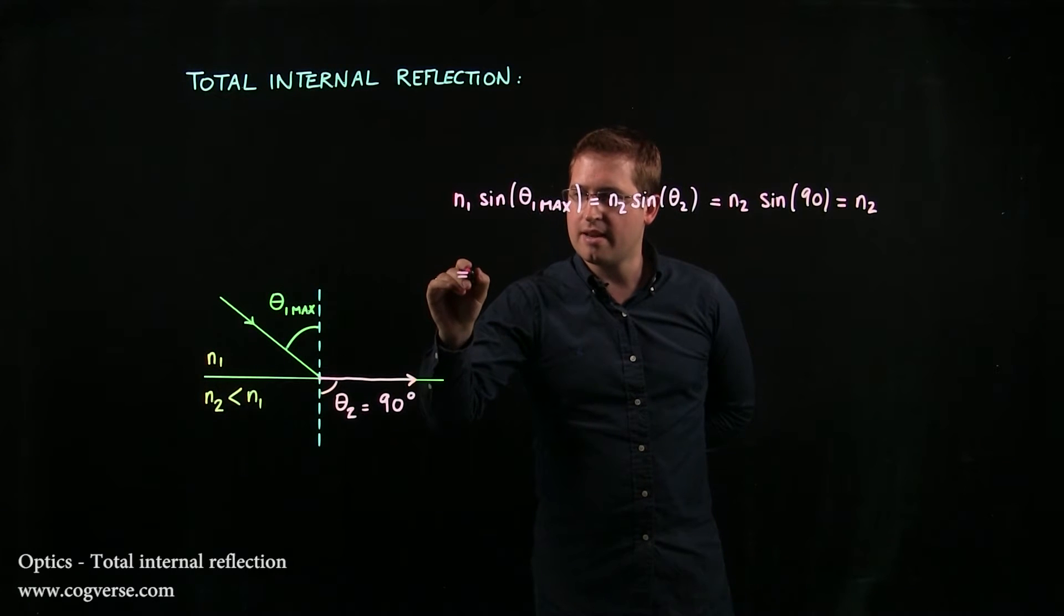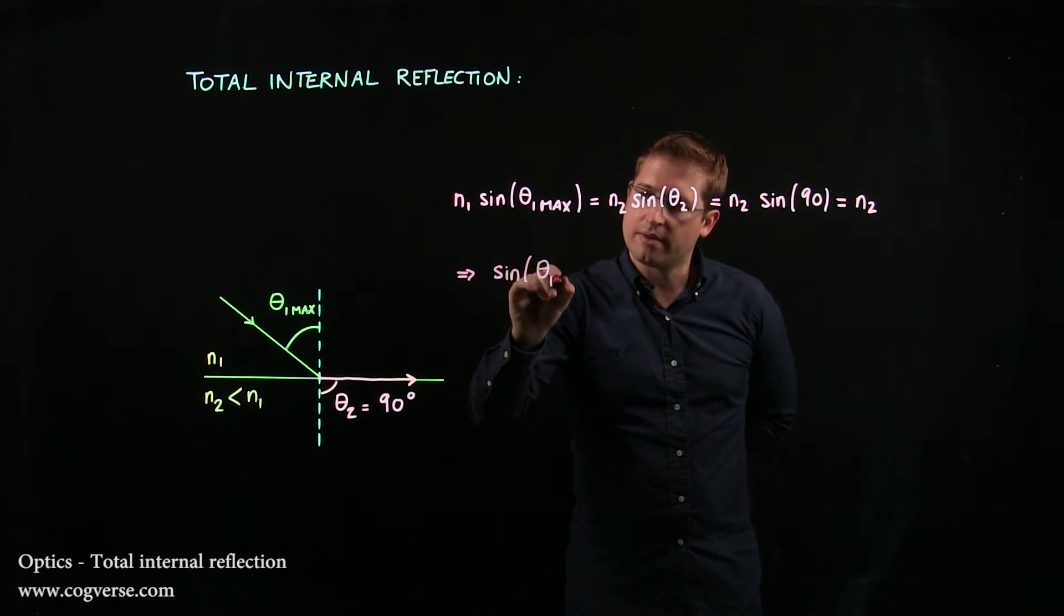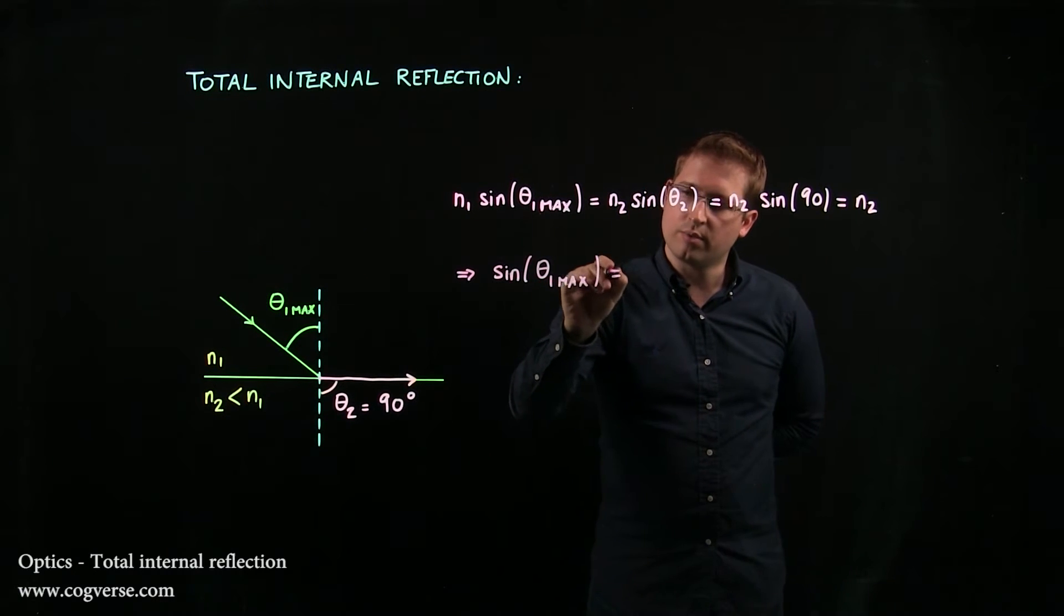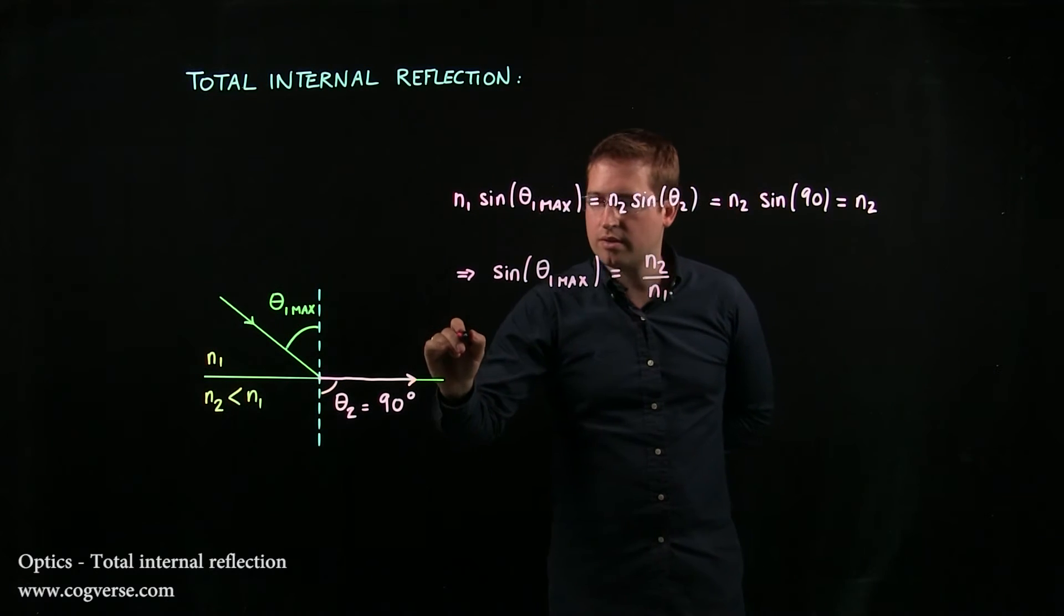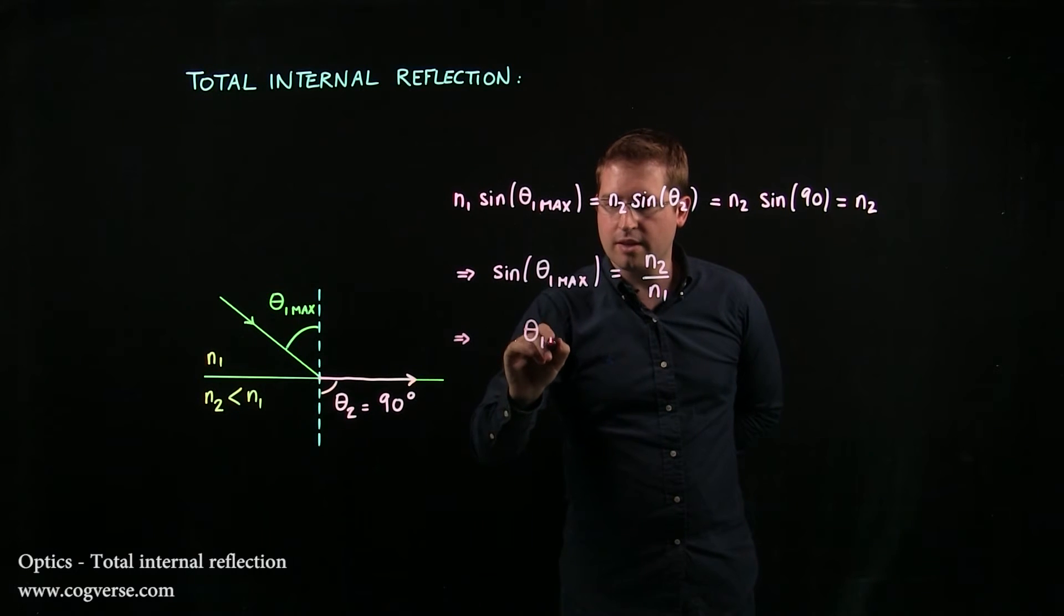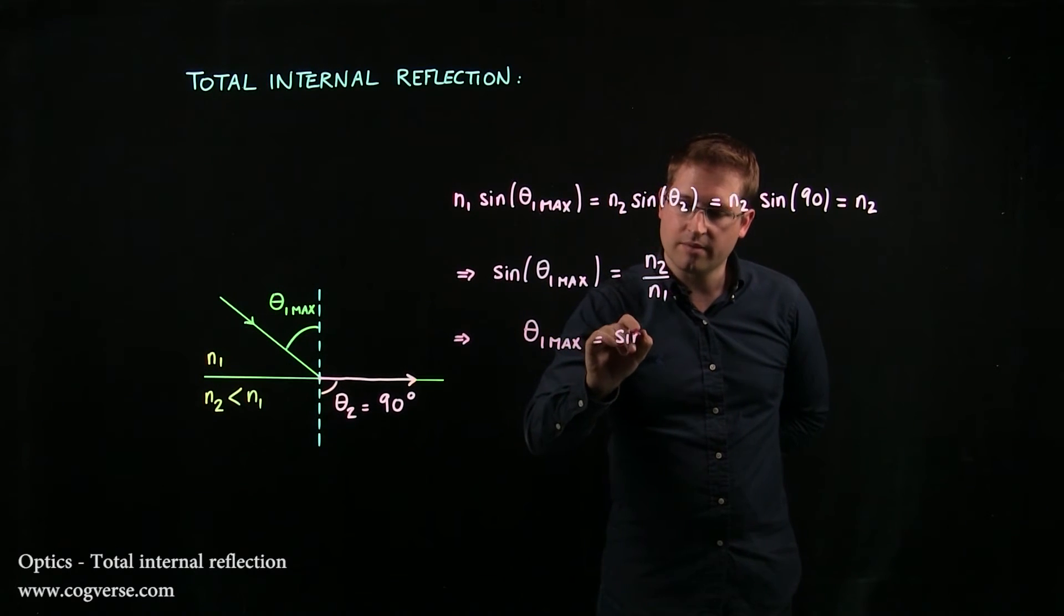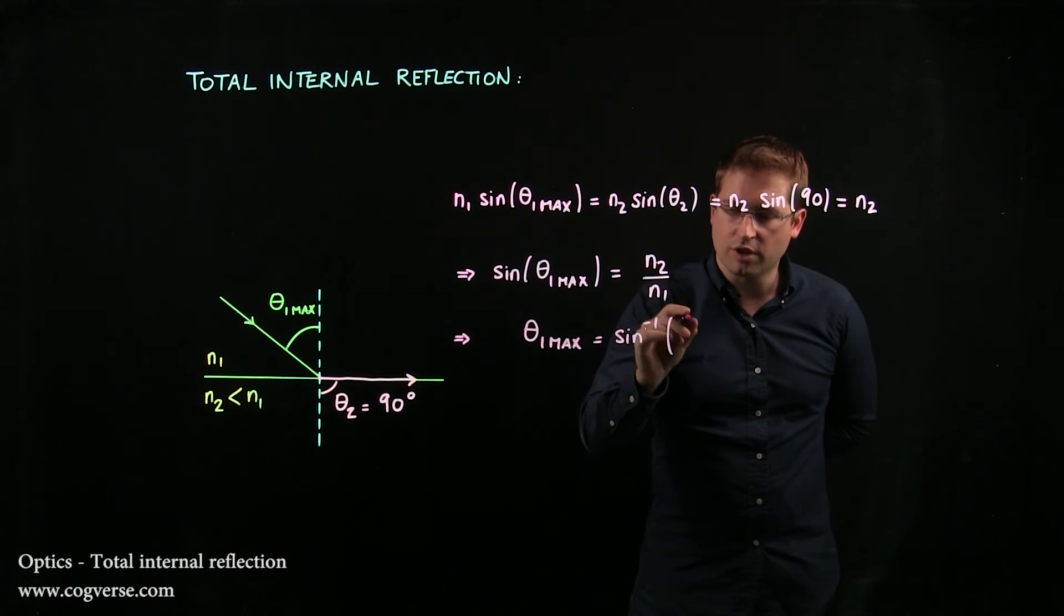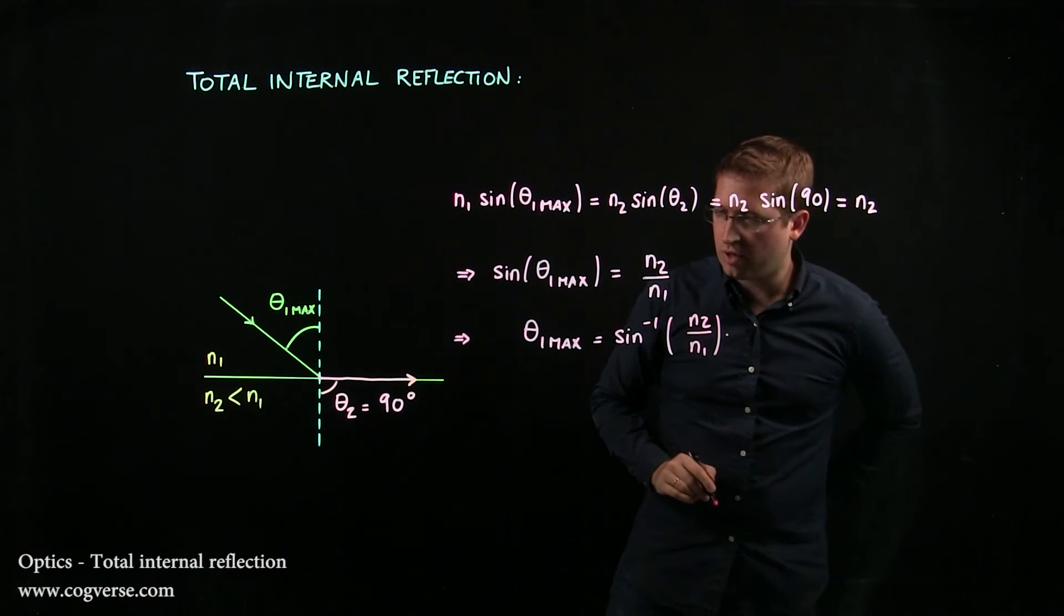And that means that sine of theta 1 max is equal to N2 over N1, which means that theta 1 max is inverse sine or arc sine, whatever you prefer, of N2 over N1.